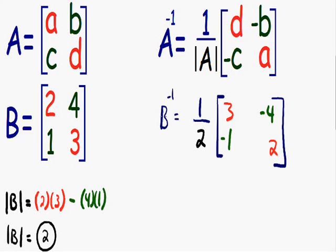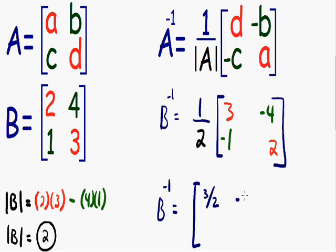So now we have taken the inverse of matrix B. However, the 1 over 2 is a scalar and can be multiplied by all the numbers, so I need to simplify this matrix a little bit further. The inverse of matrix B is equal to: 1 over 2 times 3 is 3 over 2, 1 over 2 times negative 4 is negative 2, 1 over 2 times negative 1 is negative 1 half, and 1 over 2 times 2 is positive 1. So this is our final answer — we have found the inverse of matrix B.